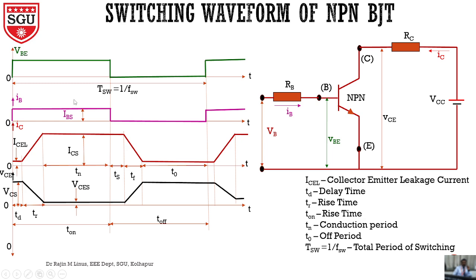I hope you understand what is meant by TSW — the on time and off time. Once we give forward bias current through the base terminal, the collector current will not increase suddenly. It will take some time and delay. A leakage current flows based on the previous switching — this is called the collector-emitter leakage current, a small amount of leakage current flows. After a particular time, the collector current will start to increase, and the time period during which the collector current is increasing is called the rise time.